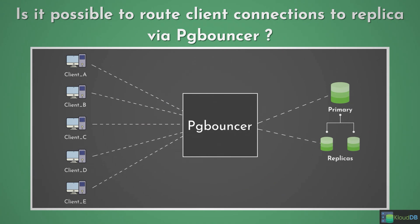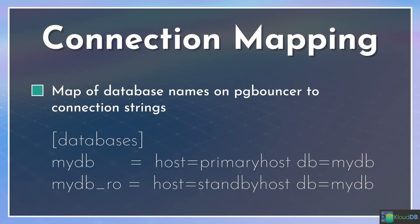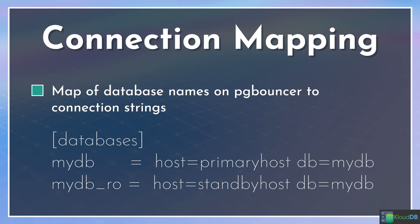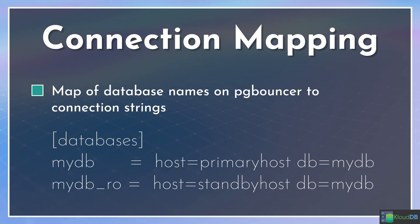Let me show you how the configuration looks. Here is a sample configuration. There is the databases section with a mydb alias and a mydb_ro (read-only) alias. In the first entry we specify the host as the primary host, and in the second line we specify the host as the standby host. So in the application configuration, when someone points to mydb the queries go to the primary host, and when someone points to mydb_ro the queries are routed to the standby host.